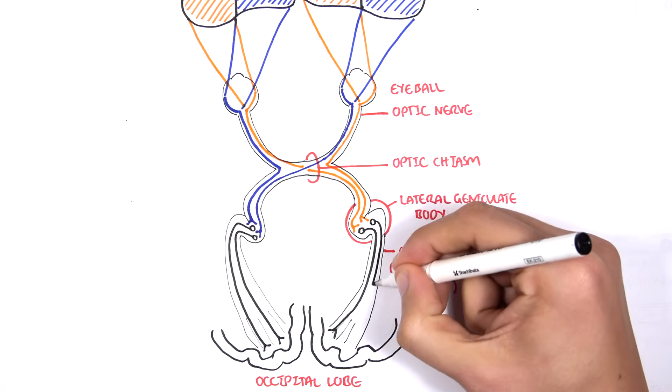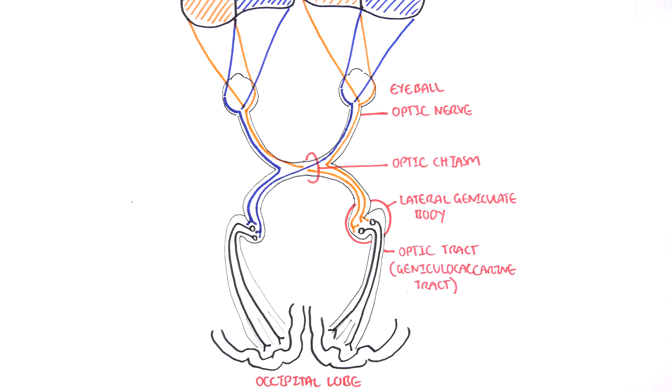It will relay this information down to the lateral geniculate body and then it will synapse with other nerves along the optic tract and then down to the occipital lobe. So, I hope this pathway makes sense.